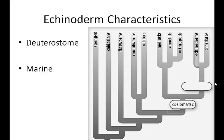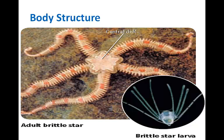Echinoderms are the first animals to develop an endoskeleton. In echinoderms, this endoskeleton consists of calcium carbonate plates, oftentimes with spines attached, and is covered by a thick layer of skin. Pedicillaria are found on the skin — these are small pincers that aid in catching food and removing foreign material from the skin.